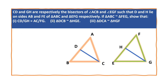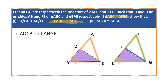Now let us solve the second one. So in triangle DCB and in triangle HGE, angle B is equal to angle E. Why? We are given that triangle ABC is similar to triangle FEG. So now let us write in triangle DCB and triangle HGE, angle DBC is equal to angle HGE. Why? Triangle ABC is similar to triangle FEG. It is given.